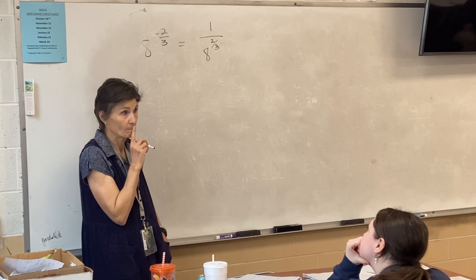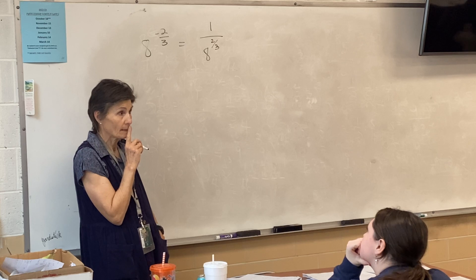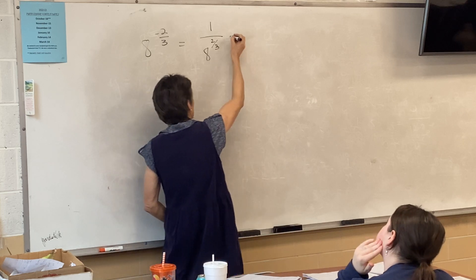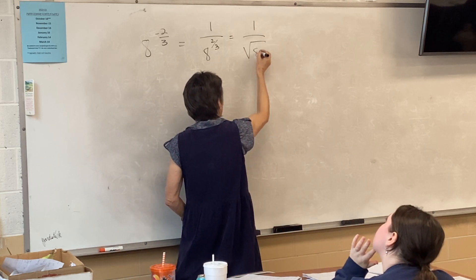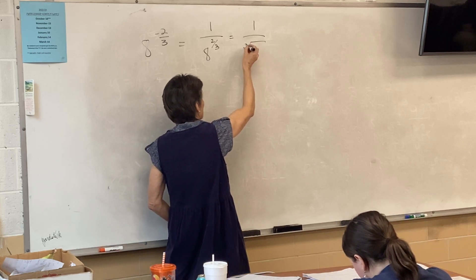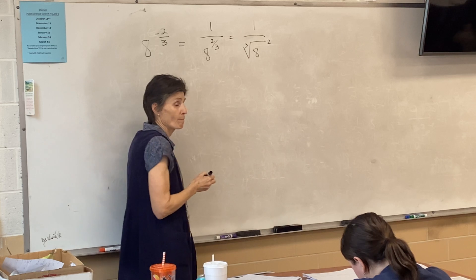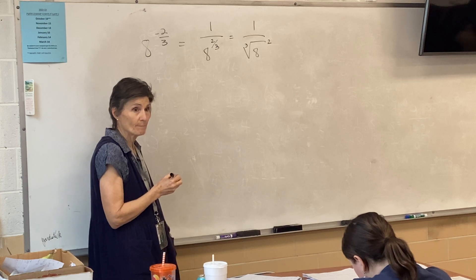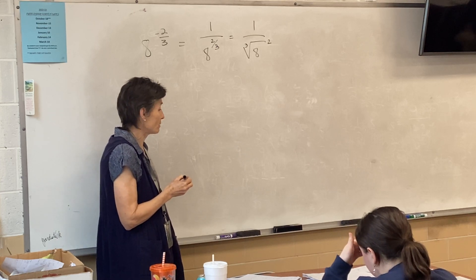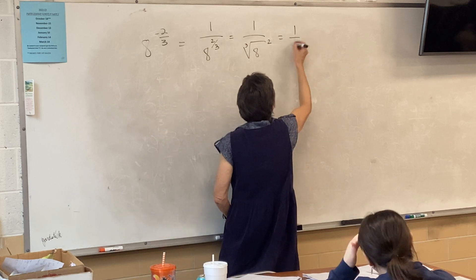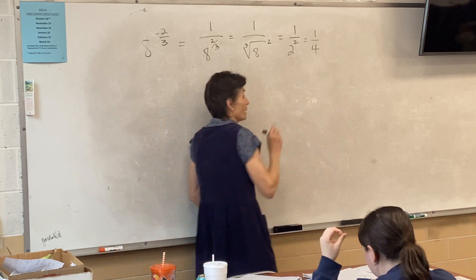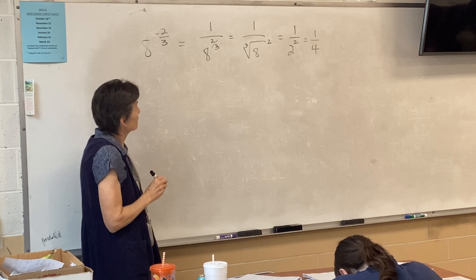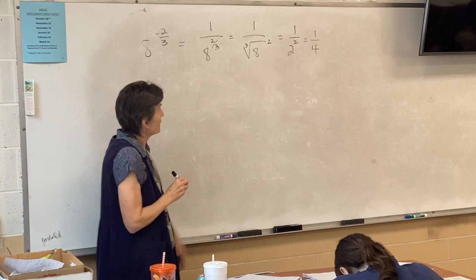Take care of the negative first. Now we have this to a fractional power, so that's going to be a radical — specifically the cube root squared. What's the cube root of eight? Two squared is four. So the answer is one-fourth: one over because of the negative, and four because we took the cube root of eight and squared it.